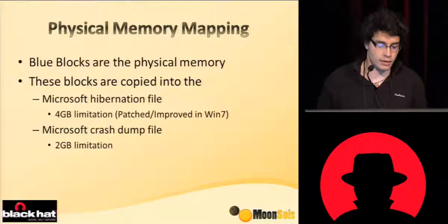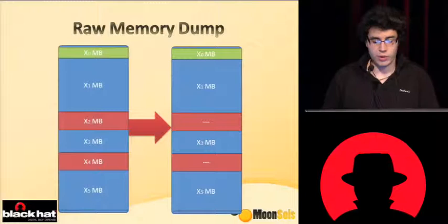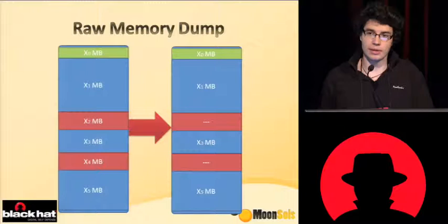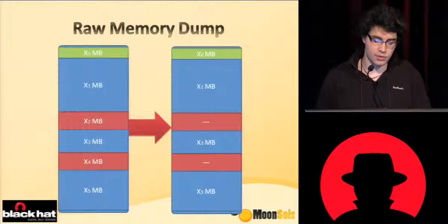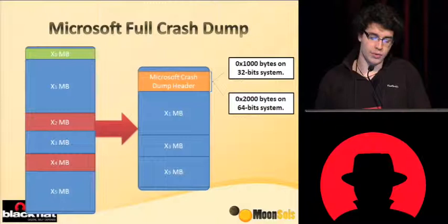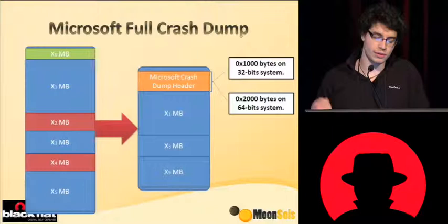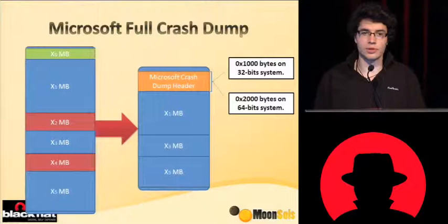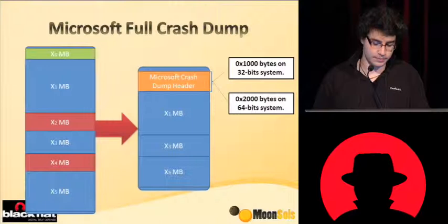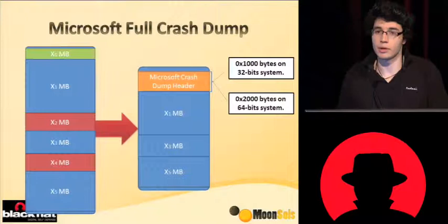When you do a copy of a raw memory dump it is exactly a copy of the physical address space — there is nothing really complex here. When Windows is generating the Microsoft crash dump, it takes only three blocks and puts them in the crash dump file, adding a Microsoft crash dump header which contains information the Windows debugger will use to initialize. Unlike the raw memory dump, the Microsoft crash dump has a format which is widely used.